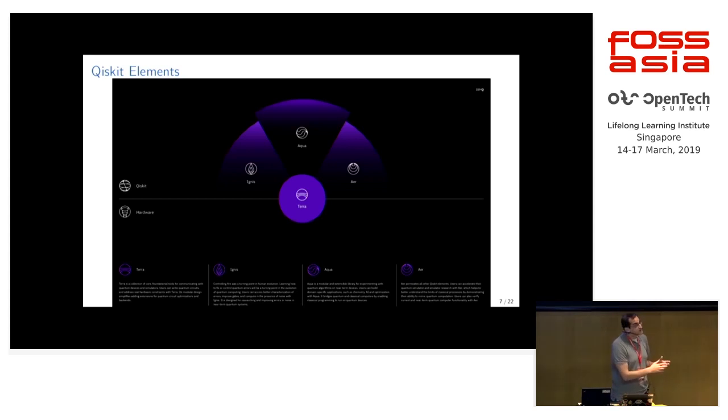And then there's the Ignis component, which is designed for dealing with noise. The computers we have today are very noisy. This provides you some techniques for characterizing that noise and trying to mitigate it. At this point in the presentation I wanted to show an example application, something we can actually run on one of these quantum computers today to give you a feel for how you do this. But before I can do that, I really needed to provide some background on quantum information because it's not something that most people know about.